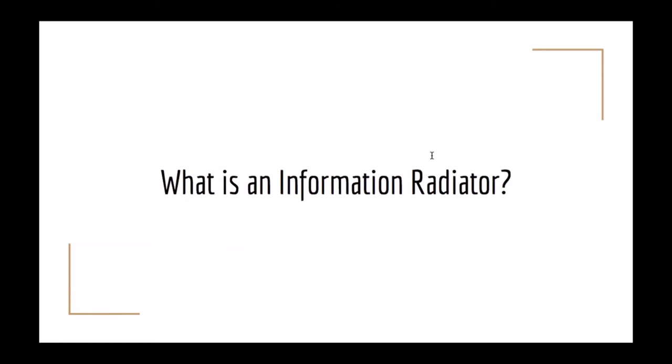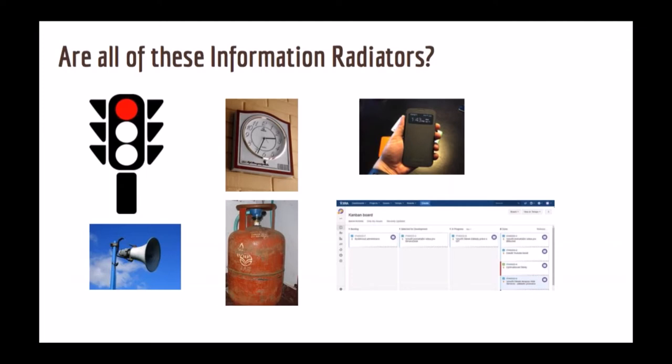An information radiator is anything that radiates information to people — the information should be made readily available to the people using that particular medium. Without getting into a CD context, I can show you some items and ask whether they are information radiators. There are six objects shown on your screen: a traffic signal, a wall clock, a mobile phone showing the current time, a public announcement system with a big speaker, an LPG gas cylinder, and a Jira software browser showing a Kanban board. Take some time — which of these are information radiators, or are some not?